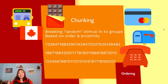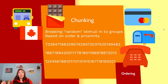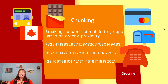Chunking is a technique used in memory psychology where we break down randomly seeming stimuli into groups based on their order and proximity — not based on meaning, but based on what order they appear in. We do this all the time. Think about a credit card number: there tend to be little spaces between those 16 digits that allow us to remember four groups of four rather than 16 groups of one. Four groups of four is easier to remember than 16 groups of one.